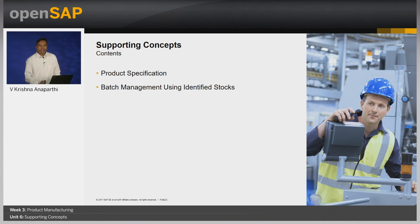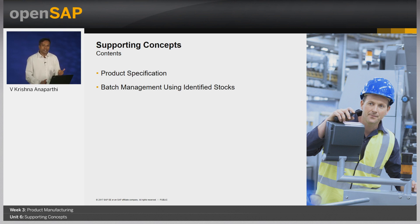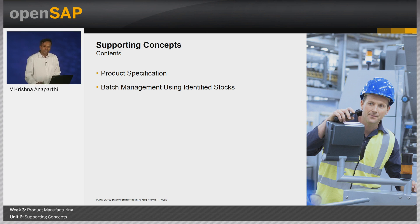The first concept is batch management using identified stocks. A batch primarily refers to grouping of a few units of inventory based on common characteristics of the units. Materials that require such precise identification — for example, in the pharmaceutical and automotive industries — are identified and managed in stock not only per material number but also per batch number. The other commonly used term for batch is lot number.